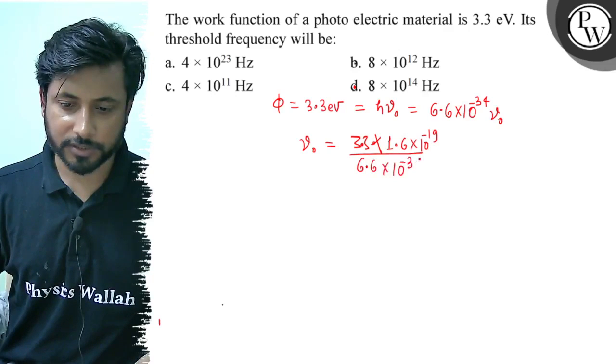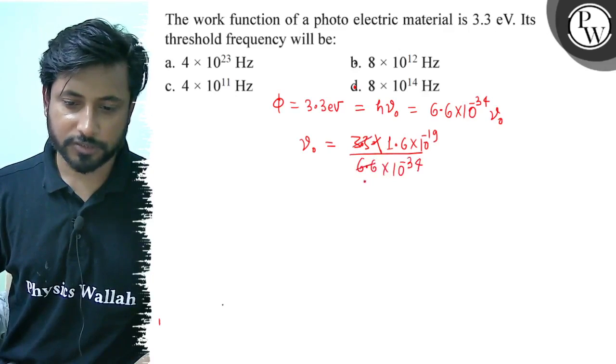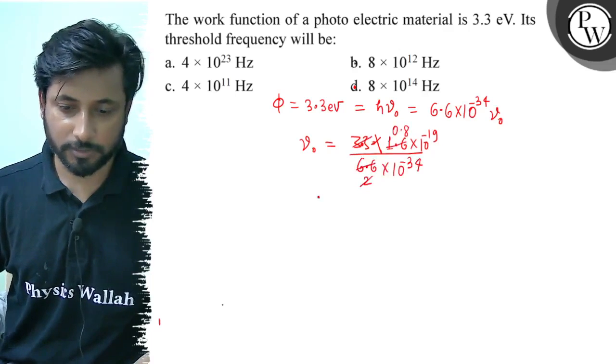3.3 and 6.6 cancel to 2 times, 1.6 and 0.8 times cancel to 2, and this solves the problem.